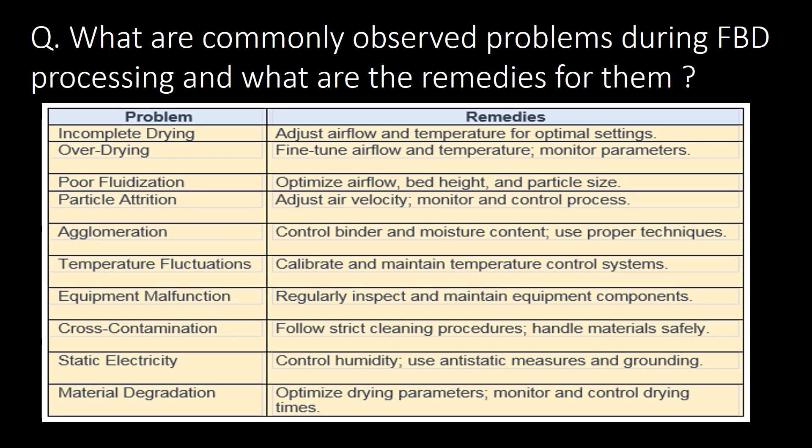What are the commonly observed problems during FBD processing and what are the remedies for them? Problems include incomplete drying, over-drying, poor fluidization, particle attrition, agglomeration, temperature fluctuations, equipment malfunction, cross-contamination, static electricity, and material degradation. Remedies can be found in the accompanying table.